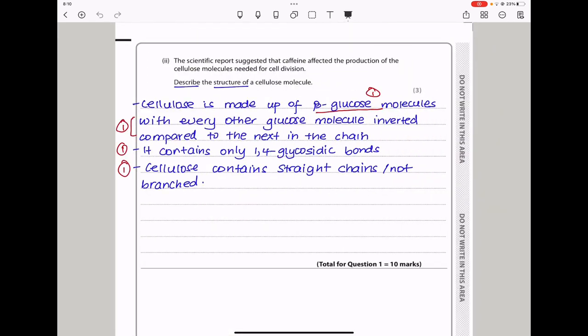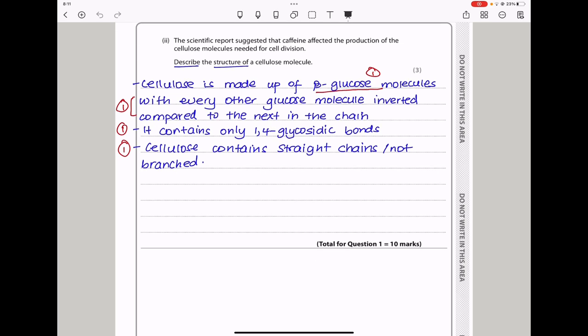Then they say the scientific report suggested that caffeine affected the production of cellulose molecules needed for cell division. They want you to describe the structure of a cellulose molecule. Cellulose is made up of beta-glucose molecules with every other glucose molecule inverted compared to the next in the chain. It also contains only 1-4 glycosidic bonds, and cellulose contains straight chains which are not branched. This brings us to the end of question one.